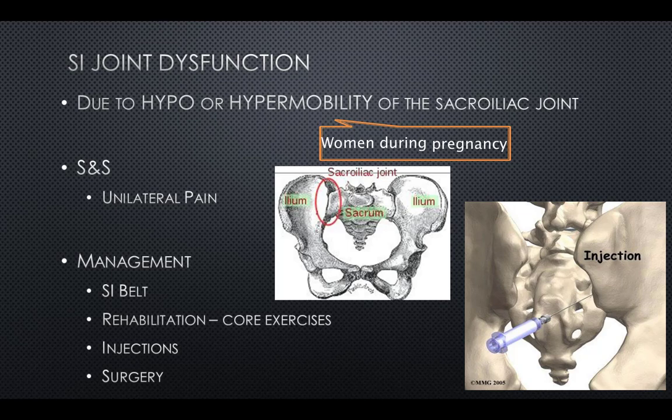Sacroiliac joint dysfunction is due to a lack of or excessive mobility at the sacroiliac joint, and is common during pregnancy especially closer to labor. Signs and symptoms include unilateral pain. Management may include an SI belt to support the joint, rehabilitation with a focus on core exercises, injections, or possibly surgery.